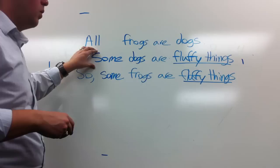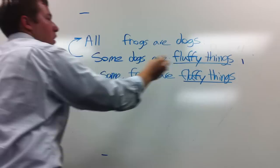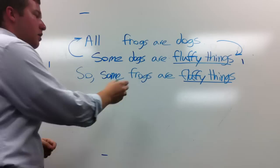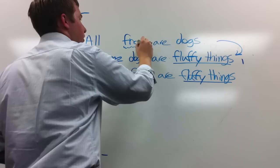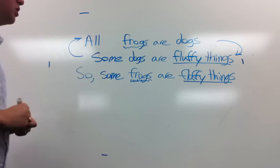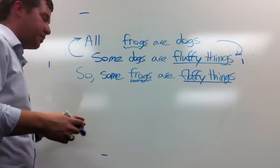We have a problem: the major premise is on top and the minor premise is below it, but we need the order to be major premise, minor premise, conclusion. The minor term is always the first term in the conclusion. So all we have to do is flip the two premises — just literally rewrite them in the correct order — so you have major premise, then minor premise, then conclusion.